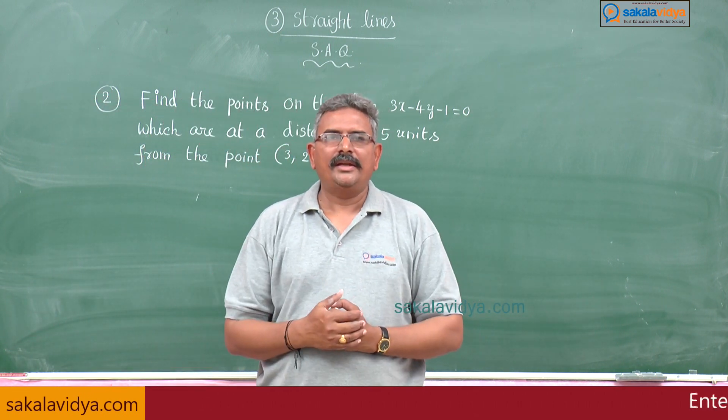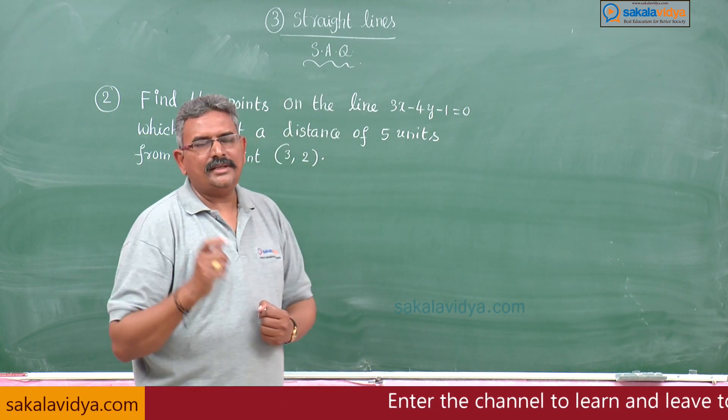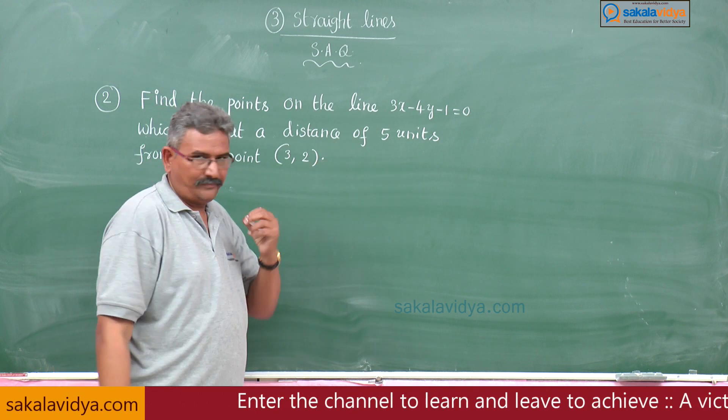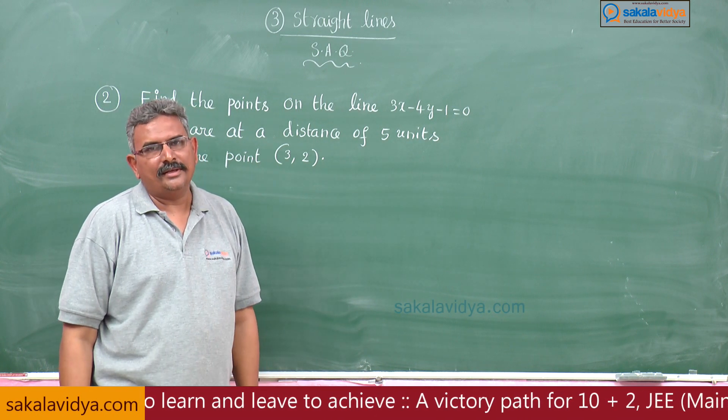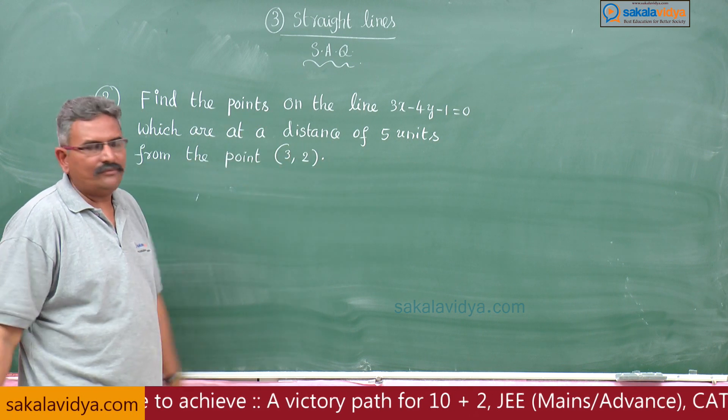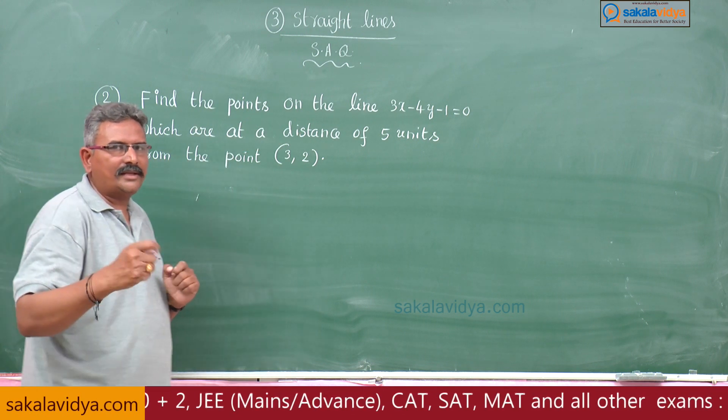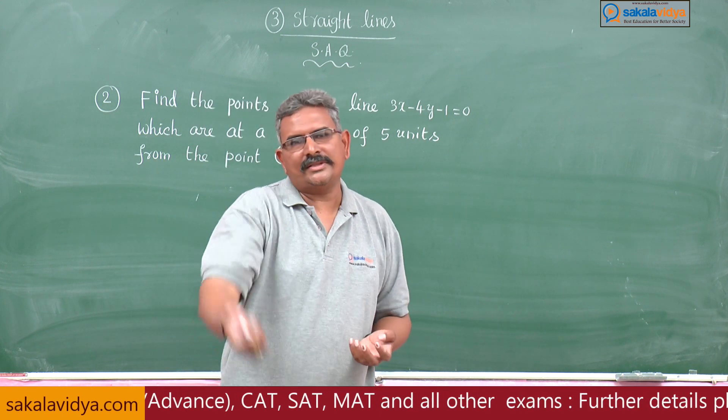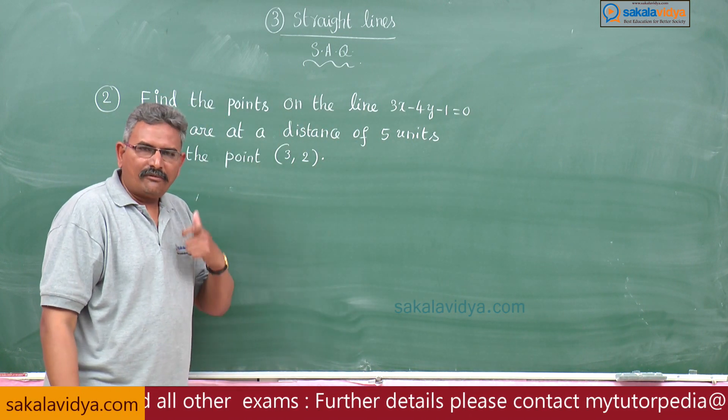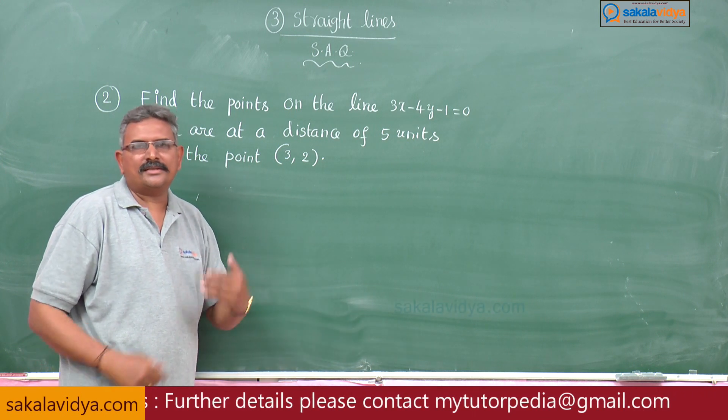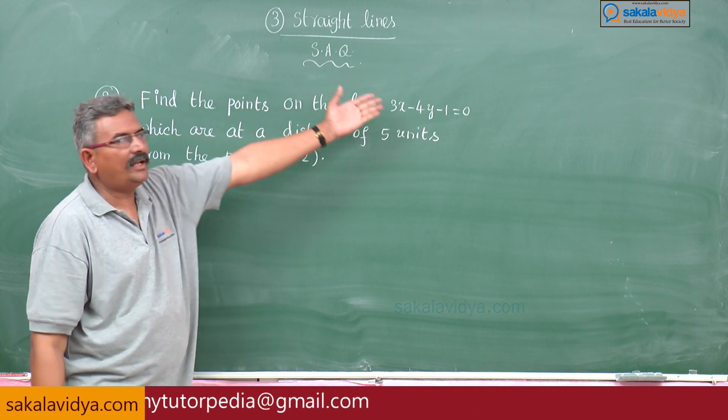You might have recollected the parametric equations: x1 plus r cos theta comma y1 plus r sin theta. Theta is the angle of inclination of the straight line. r is the required distance, which is 5 units here, so r equals 5. First, we need to find the slope of the line, which is tan theta. After finding tan theta, we can easily find sin theta and cos theta.